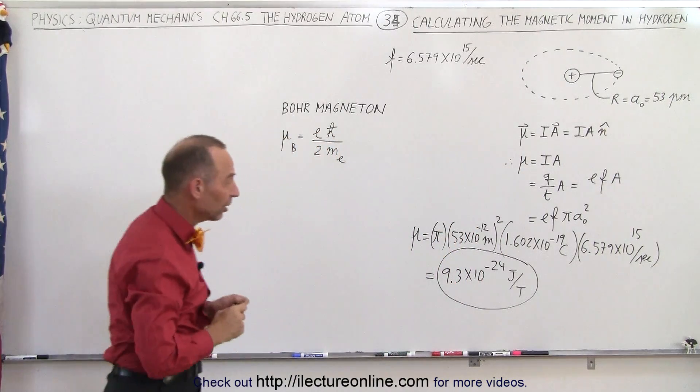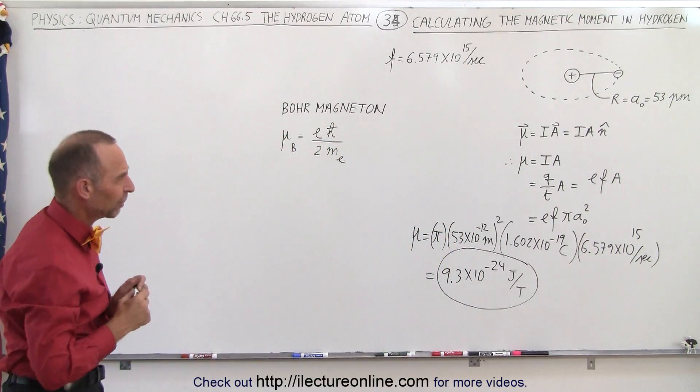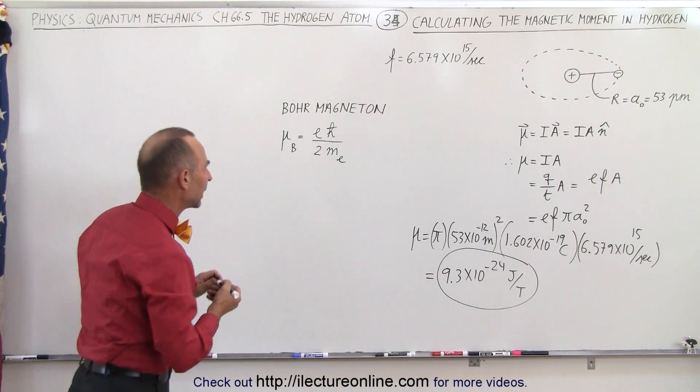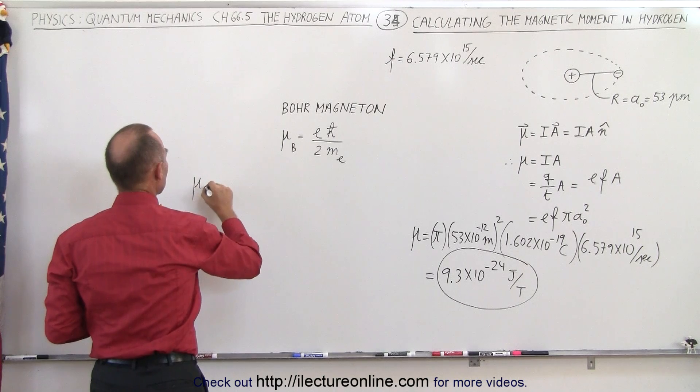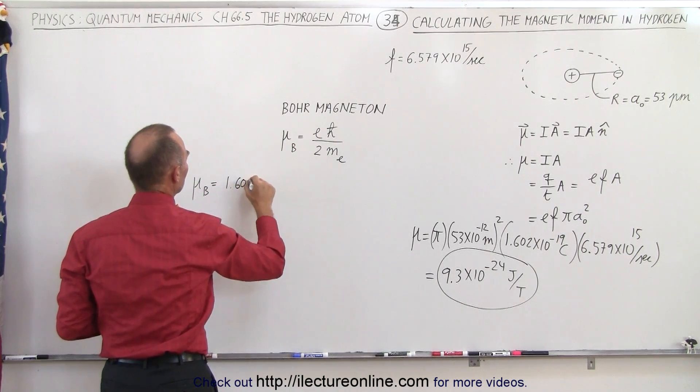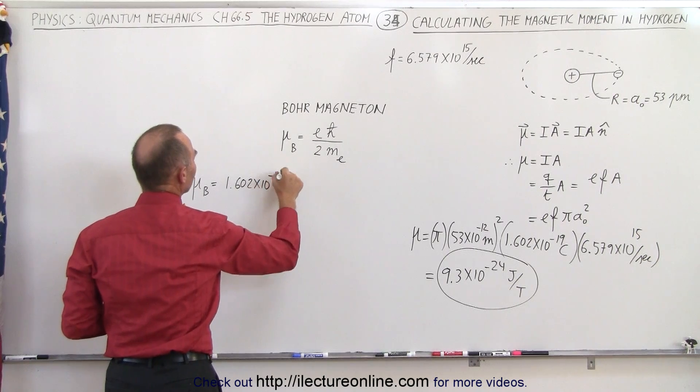We might be slightly off, but that's good enough. That's actually pretty close to what I was expecting. So now let's go ahead and calculate the Bohr magneton using the quantum mechanic terms. So we say that U sub B is equal to the charge of a single electron, 1.602 times 10 to the minus 19.